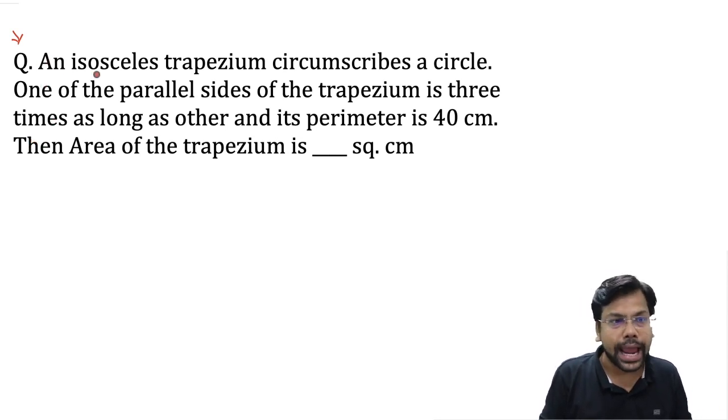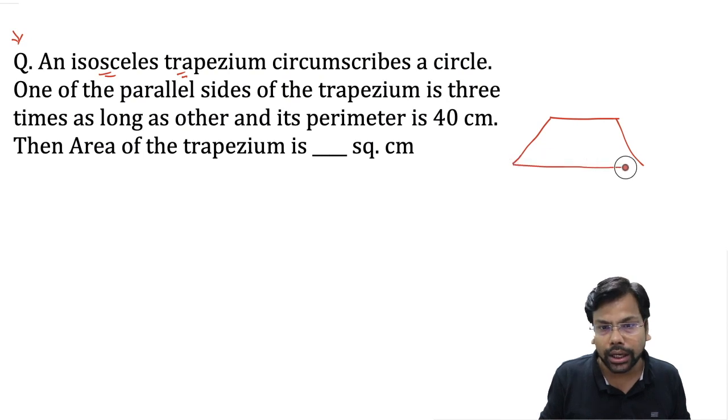The first concept is an isosceles trapezium. What is the meaning of isosceles trapezium? Isosceles trapezium is a trapezium where the non-parallel sides are equal.